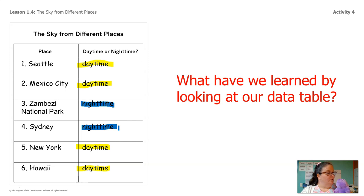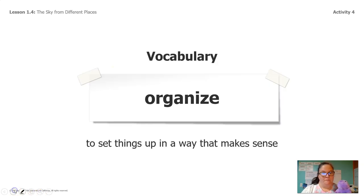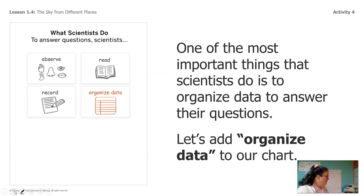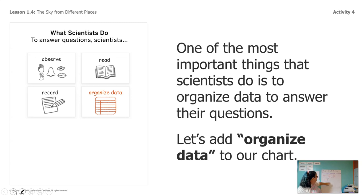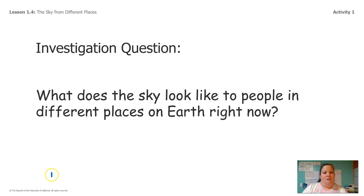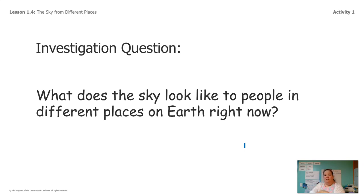Very strange — I did not think that was going to be true. So what we just did is we organized our data, set it up in a way that makes sense. I'm going to put that up on our chart of what scientists do — we organized our data by what cities were day and which places were night. So we observed, we recorded, and we organized our data, which means we're just about done today. What does the sky look like to people in different places on Earth right now? The sky looks different depending on where you live. Who knew?